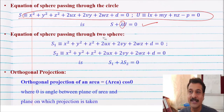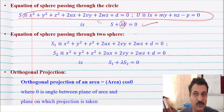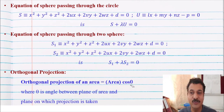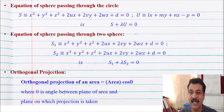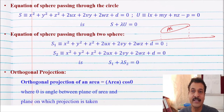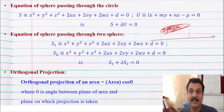Also remember orthogonal projection, because sometimes there may be examples on it. The orthogonal projection of an area equals area times cos θ — first find the area, then multiply by cos θ. Here θ is the angle between the plane of the area and the plane on which the projection is taken.